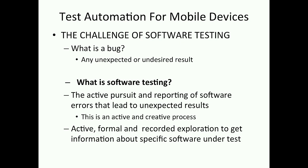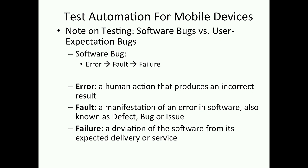Just when you're finished developing, you can continue your creativity in the testing process. I also call it an active, formal, and recorded exploration to get information about the specific software under test. There are two things to look for — this applies to manual testing, test automation, any kind of testing. There are two kinds of bugs: software bugs versus user expectation bugs. A software bug, as the IEEE report says, is an error that leads to a fault that leads to a failure. An error is a human action that produces an incorrect result — something that you do that causes an error.